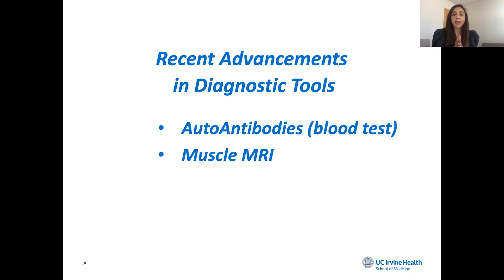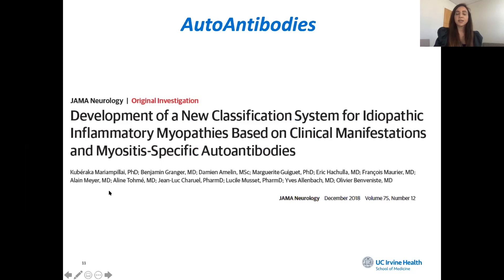It really becomes important to get to the diagnosis fast and avoid unnecessary treatment, especially in patients with inclusion body myositis. The challenge is that we used to use muscle biopsies as the sole way of distinguishing between these patients, but unfortunately the muscle biopsy features are not always present. More recently, especially in the last five to ten years, we've been using blood tests — the muscle autoantibodies — to help distinguish these features. There have even been newer proposals suggesting a new classification based on clinical features and the myositis autoantibodies.